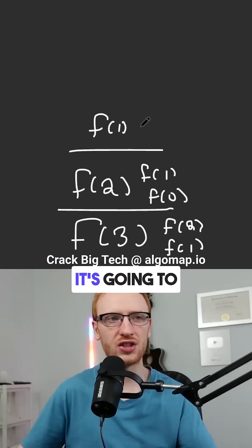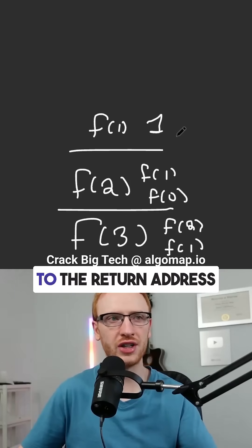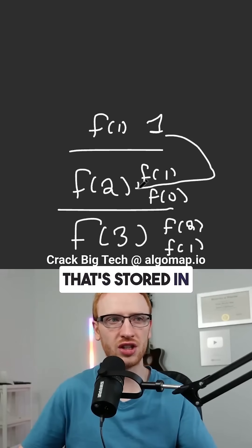We get f at 1, and it's going to return the result of 1 to the return address that's stored in this function call.